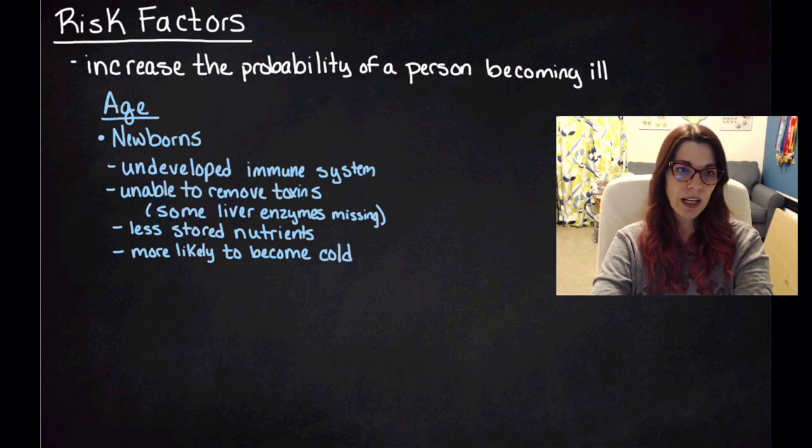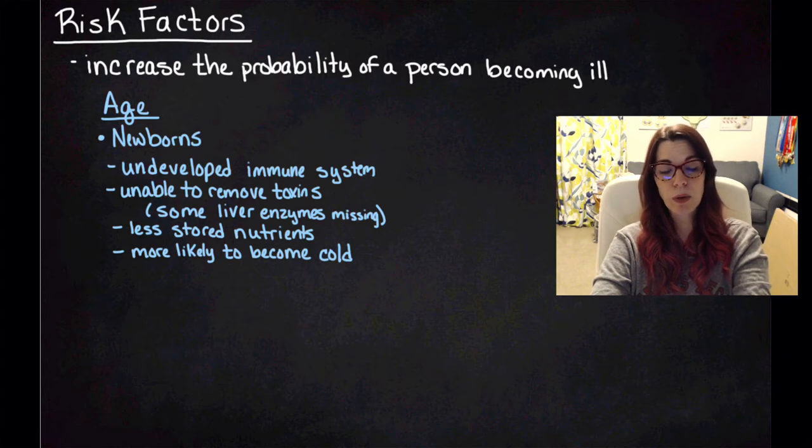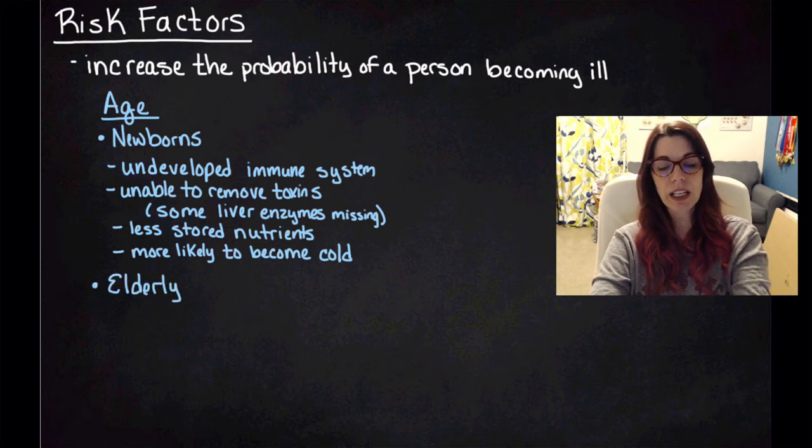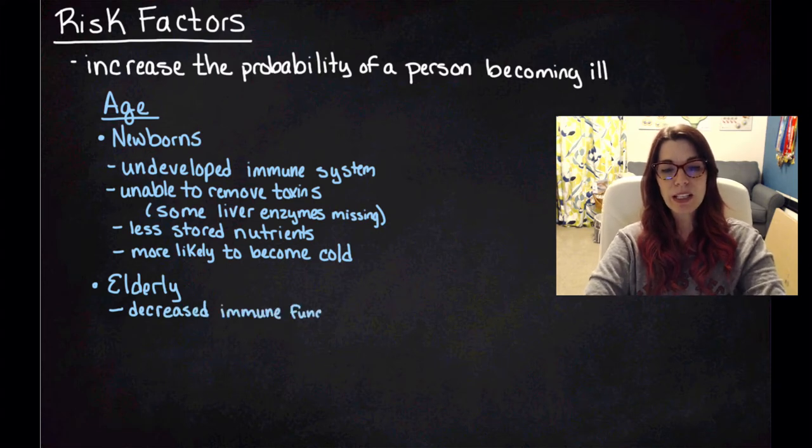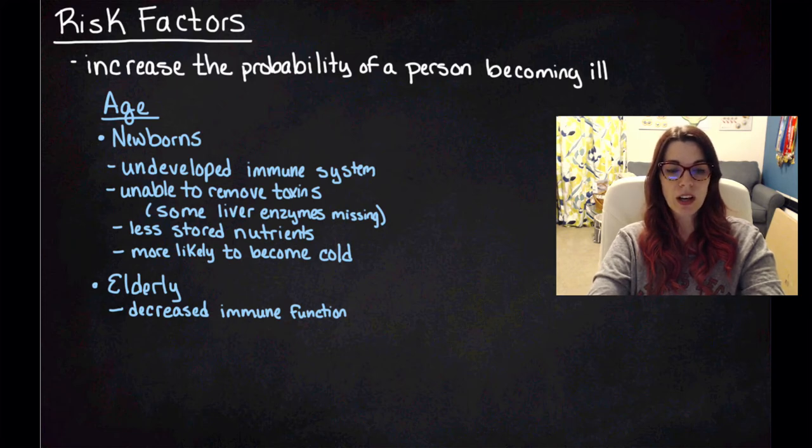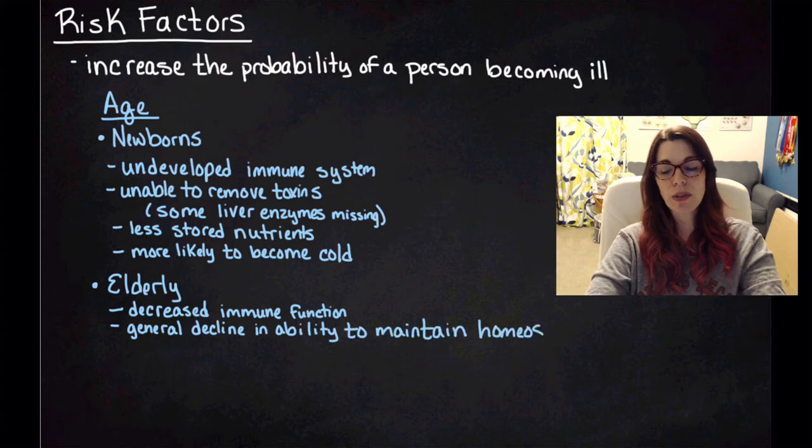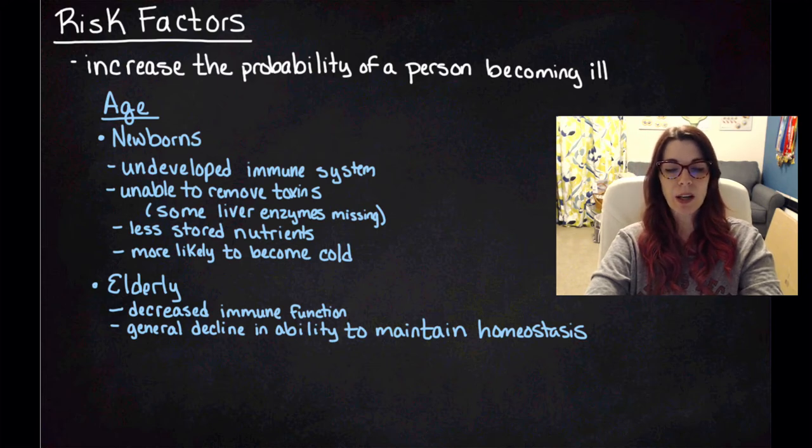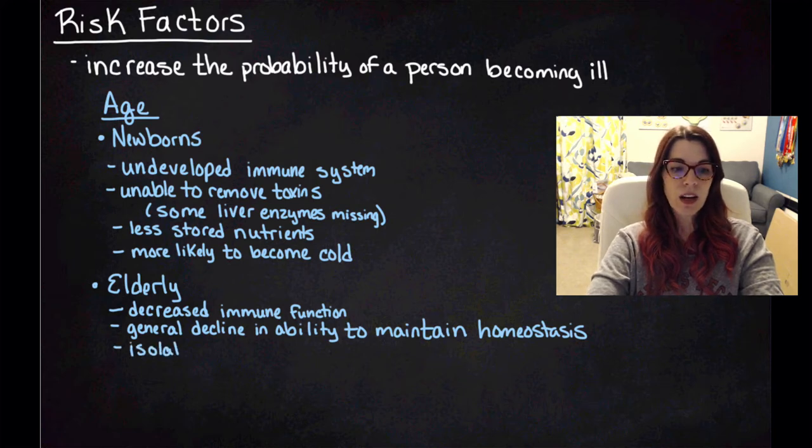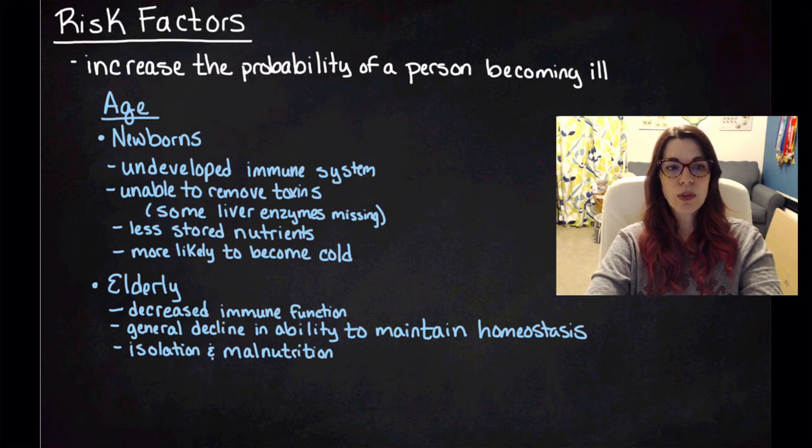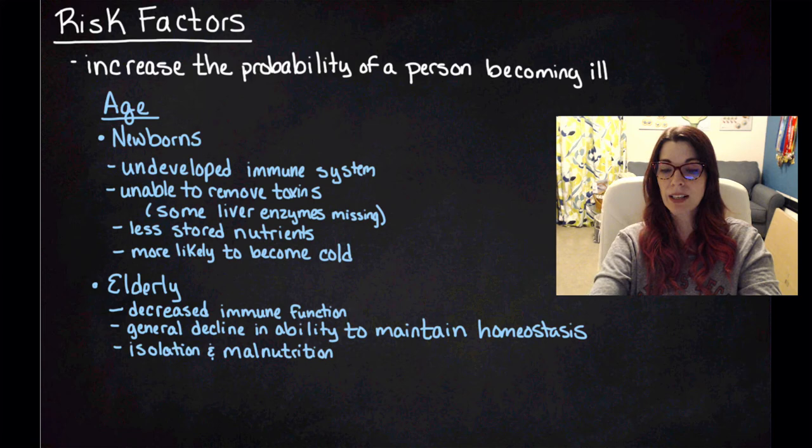The next age group that we're really concerned about as a risk factor is the elderly. The elderly have decreased immune function just because as you age, you end up getting decreased immune function. And then you also get a general decline in the ability to maintain homeostasis as you age. So as homeostasis is disrupted, it's going to put you more at risk of contracting additional illnesses. They also are typically isolated and are subject to malnourishment, so those are going to increase the probability that they contract a disease.